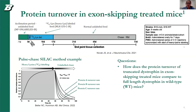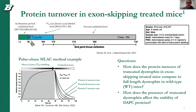These are the main questions we are trying to answer with this study. Number one is: how does protein turnover of truncated dystrophin in exon-skipping treated mice compare to full-length dystrophin in wild-type mice? And two: how does the presence of truncated dystrophin affect the stability of DAPC proteins?